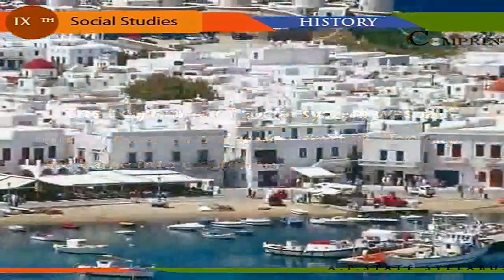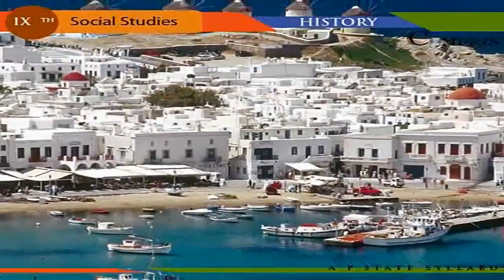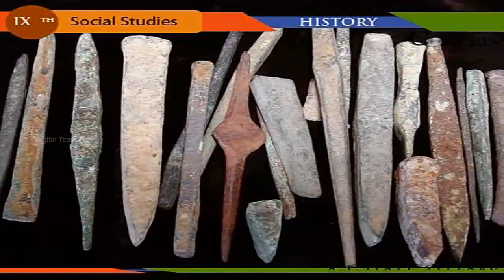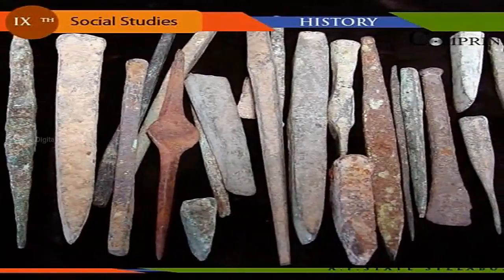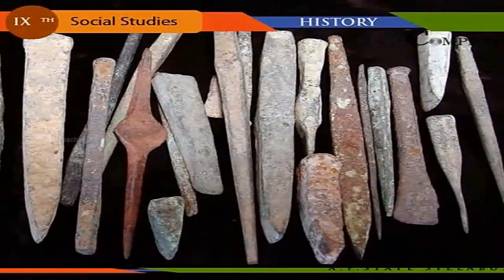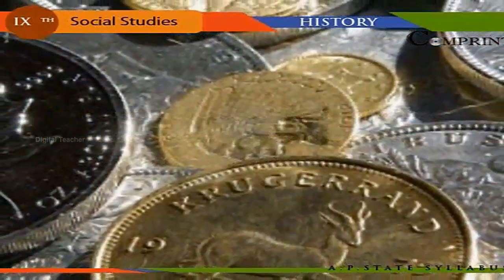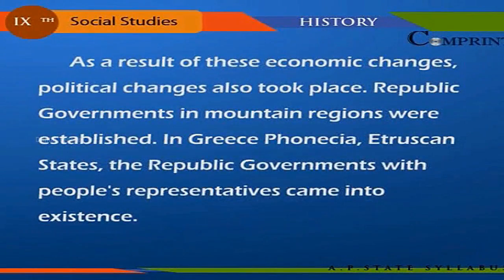In Greece, China, and India, new philosophical thoughts emerged. The new implements of agriculture and deep plowing helped enrich agricultural yield. Common people greatly benefited from the knowledge of iron. The Phoenicians devised a script for writing, and as a result, Hebrew, Arabic, and Indian languages progressed. Gold and silver coins also came into use.